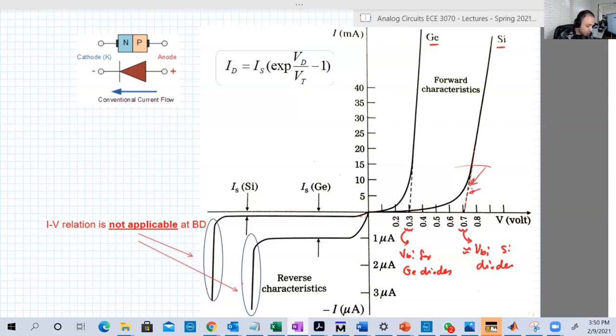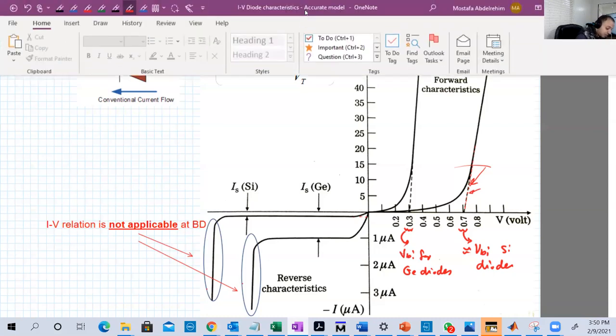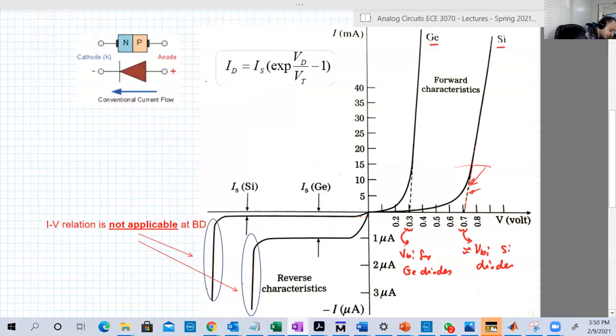This is for the forward bias condition. Let's now go to the reverse bias condition. In reverse bias, we can divide the reverse operation into three regions. Let's first talk about germanium, then apply this to silicon because it's much more clear or obvious in germanium.